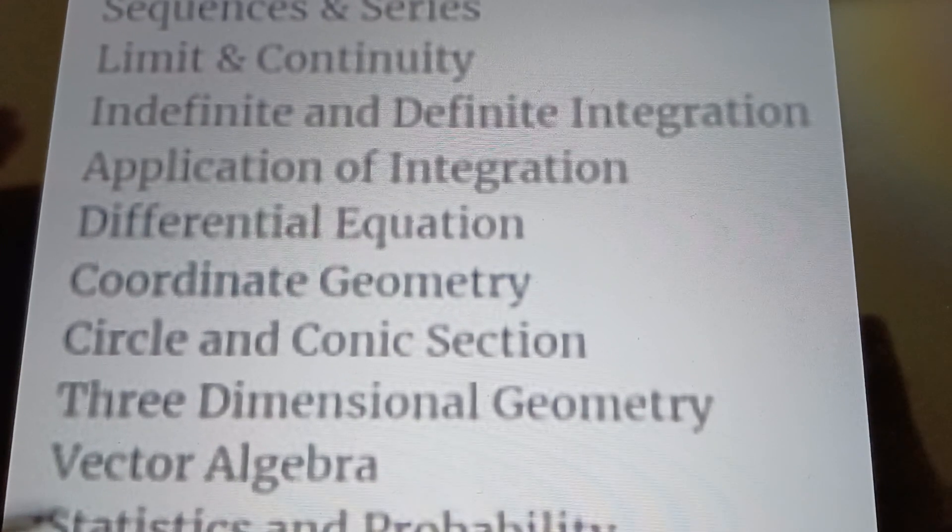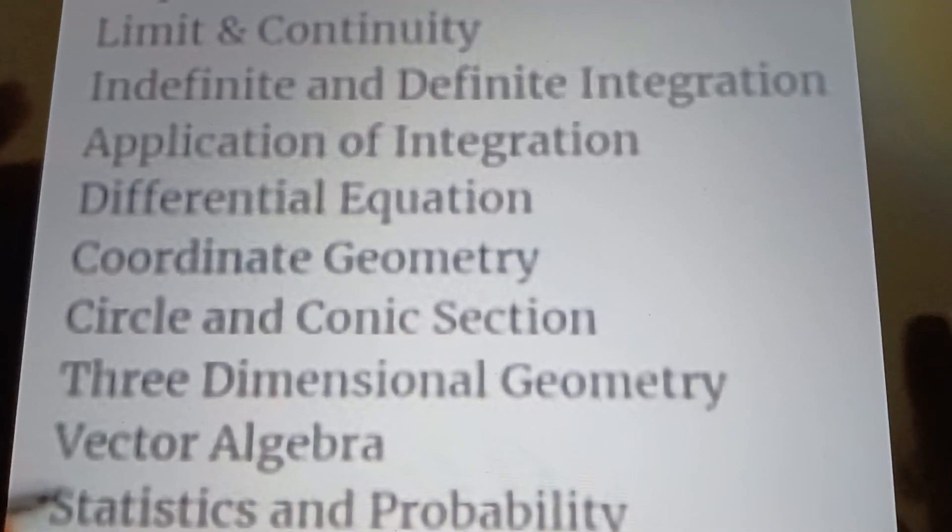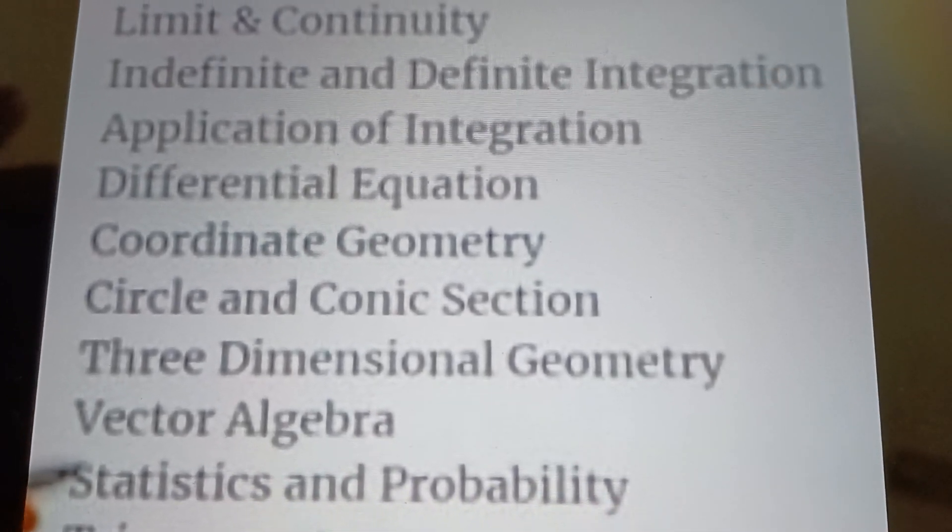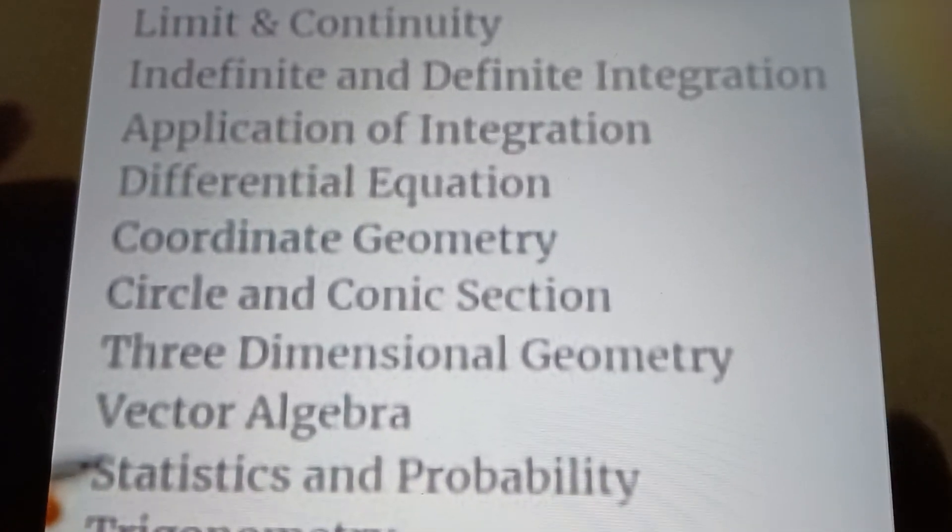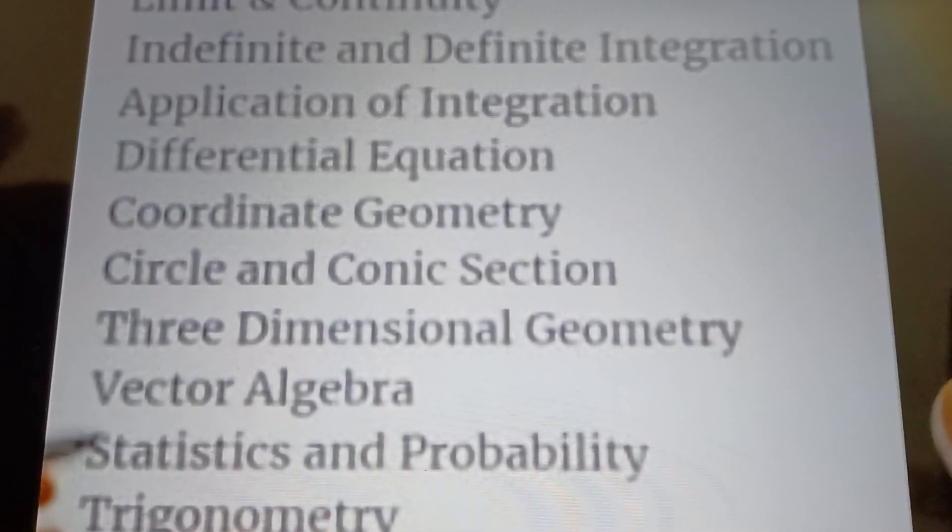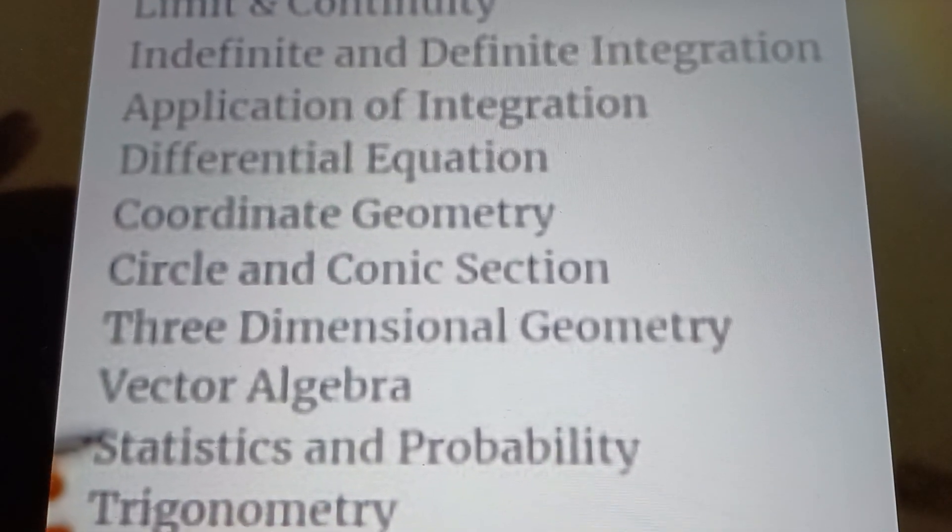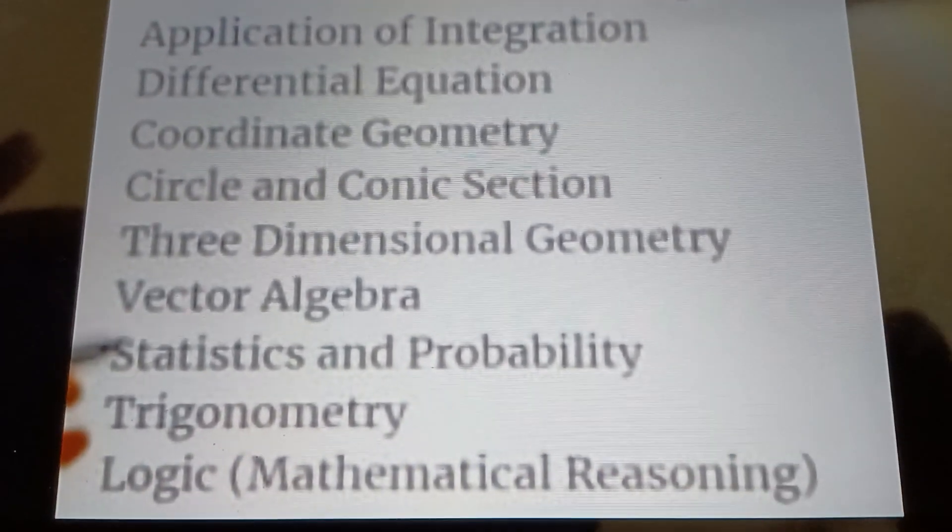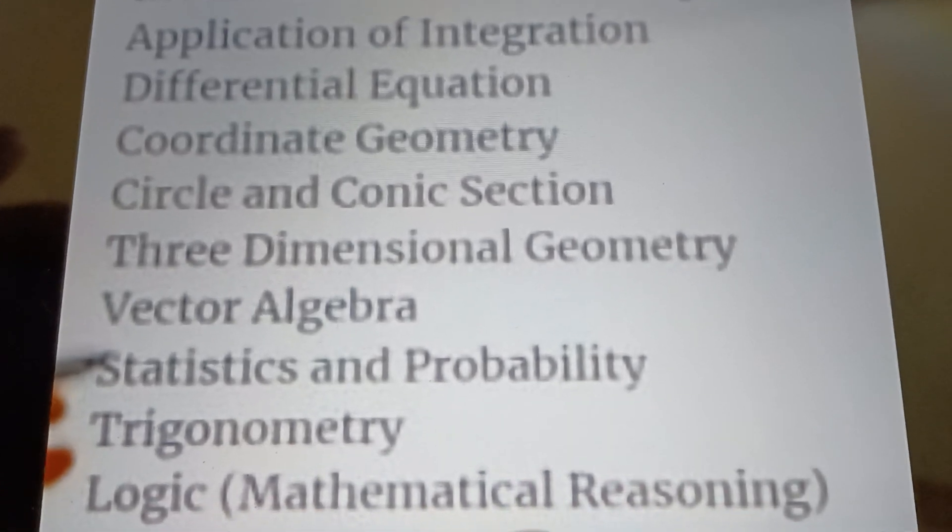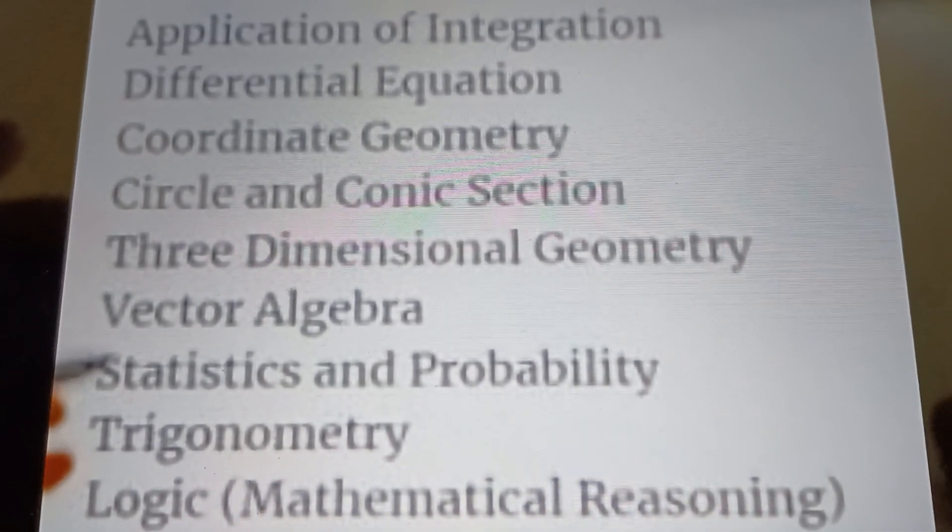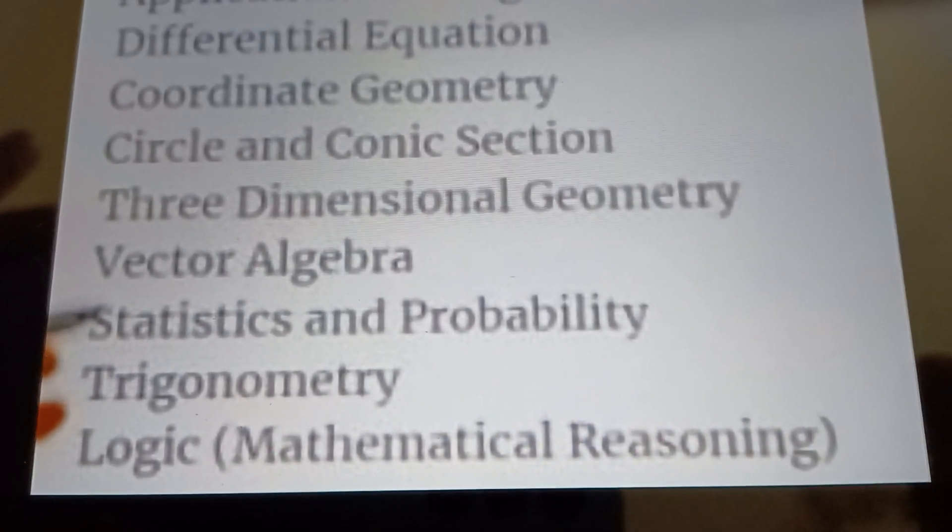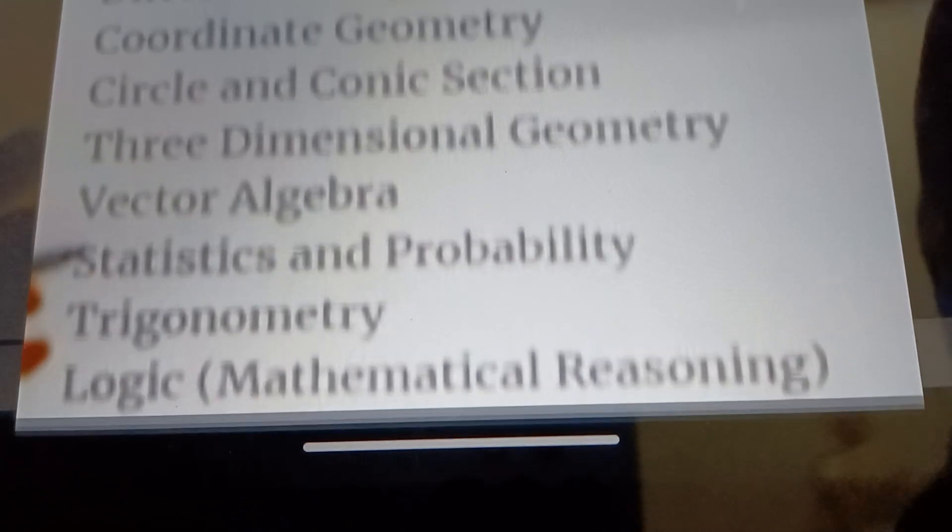For Circle and Conic Sections, this includes: Circles, System of Circles, Parabola, Ellipse, and Hyperbola—five topics total. Then Three-Dimensional Geometry, Vector Algebra which includes addition of vectors and product of vectors, Statistics and Probability, Trigonometry with all ten topics from first year, and Logic or Mathematical Reasoning.